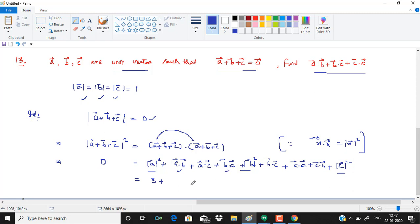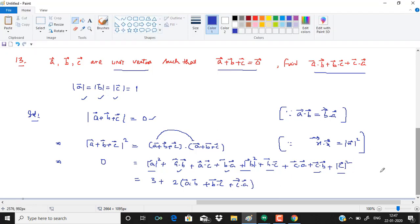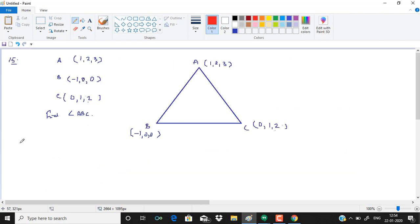We know that a dot b is same as b dot a. Similarly b dot c or c dot b are same, and c dot a or a dot c are the same. So we have twice of (a dot b plus b dot c plus c dot a). Taking 3 to the other side, we get minus 3 equals twice of (a dot b plus b dot c plus c dot a). Therefore, a dot b plus b dot c plus c dot a equals minus 3 by 2.